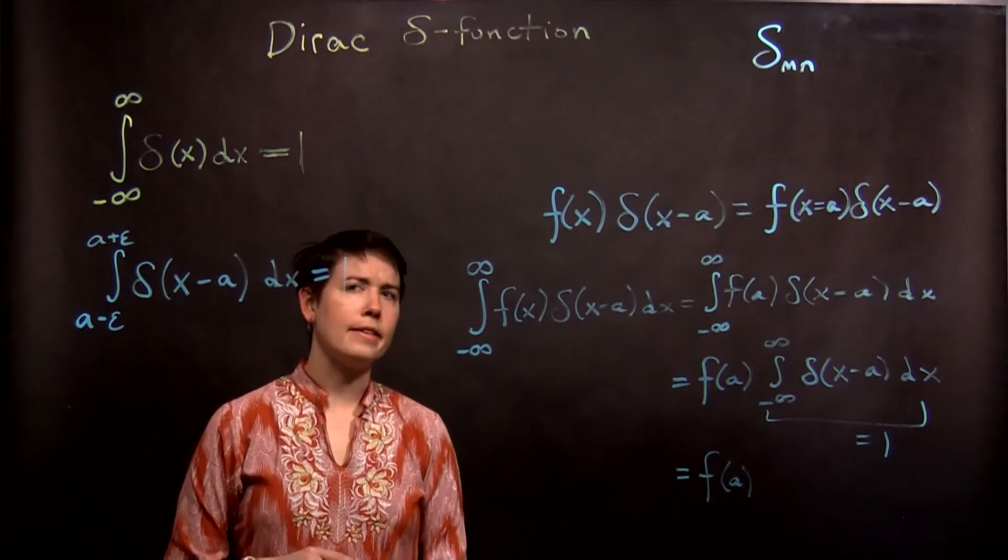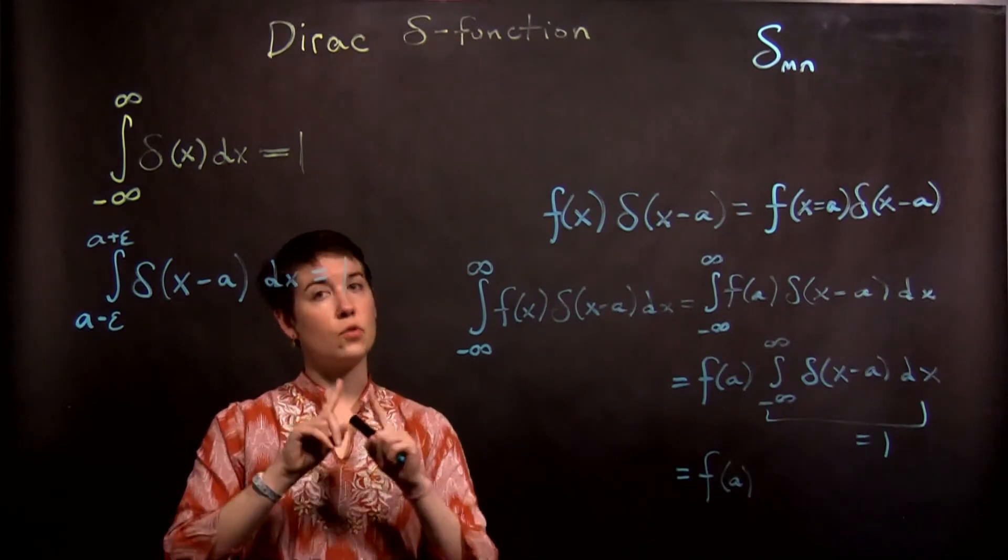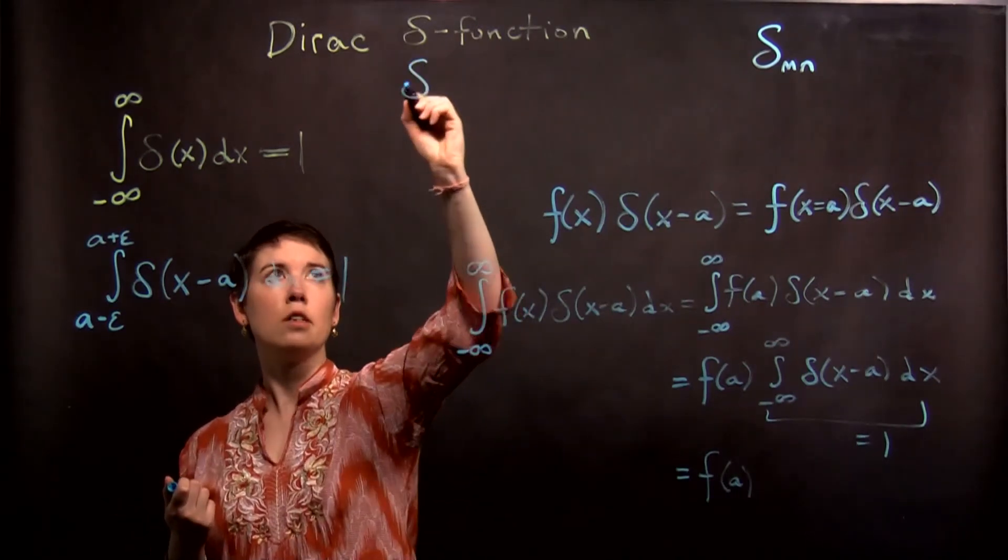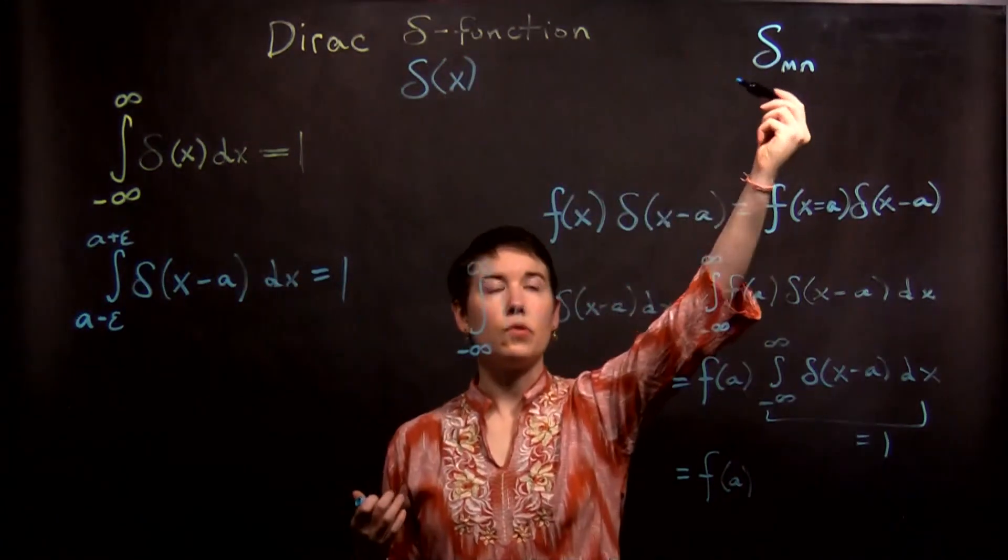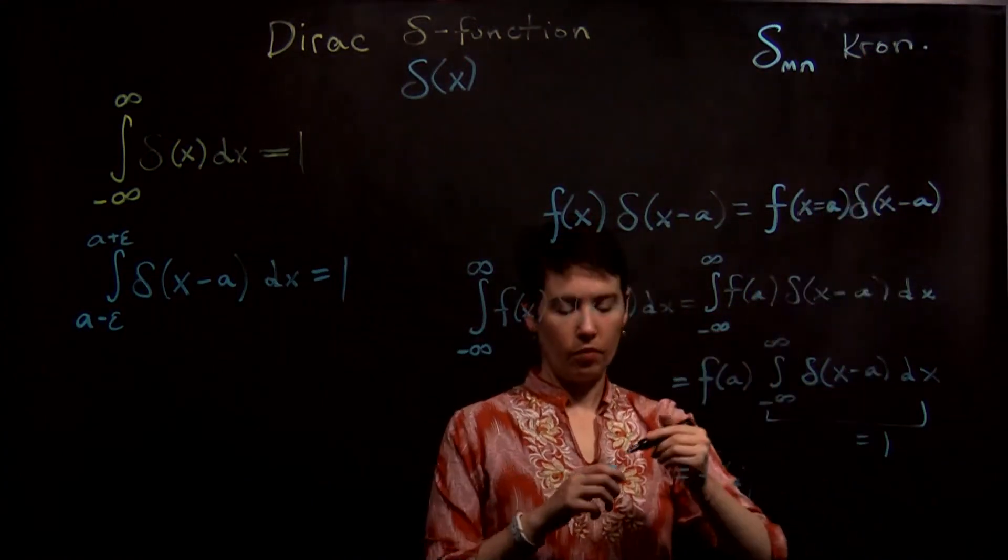And it's a mathematical thing that comes up a lot. So I hope this is a helpful introduction. The key is to recognize there's two different delta functions. This continuous function, so you'll see it as delta of x or x minus a versus delta of mn, which was the Kronecker delta function.